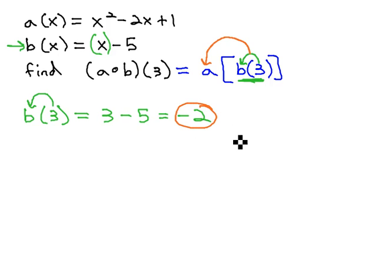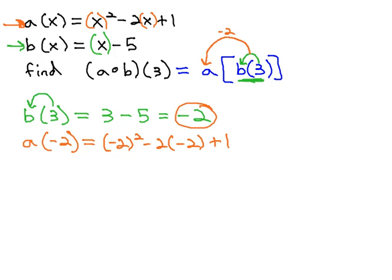This -2 then is the answer that needs to be plugged in to the a function. We're looking to actually find a of that answer, a(-2), and that's what we're going to plug in to the a function. Each of these x's in a is going to be replaced with -2, the answer we got in b. So x² becomes (-2)² minus 2x, which is -2, plus 1.